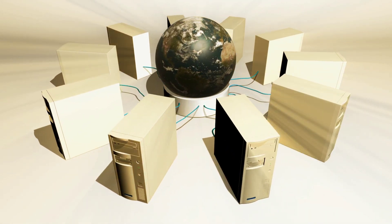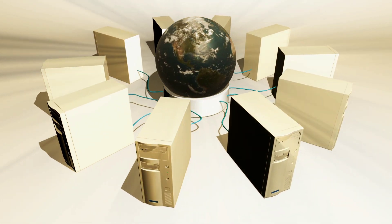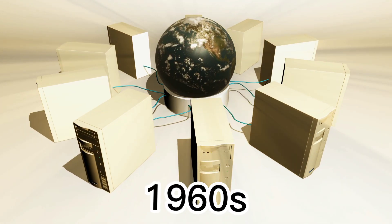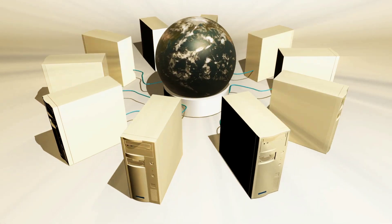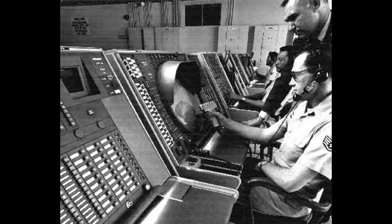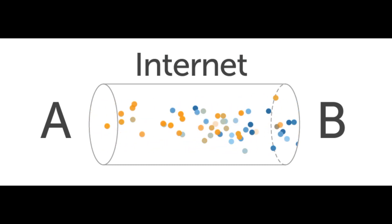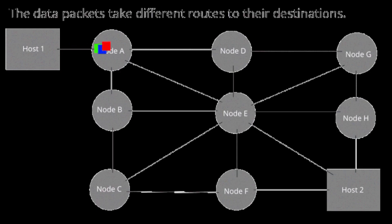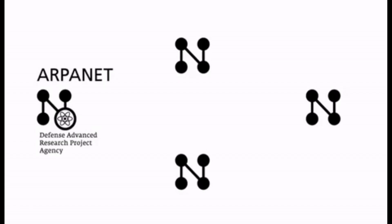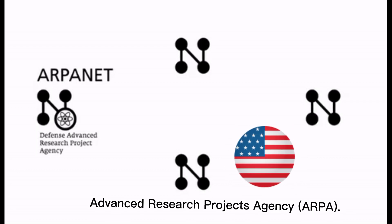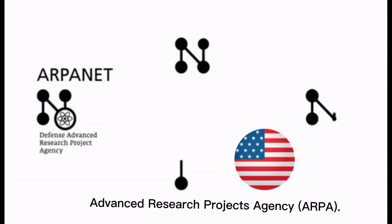The Internet has undergone significant evolution since its creation in the 1960s. The early stages of the Internet were primarily focused on connecting government and academic researchers through the use of packet switching technology, which allowed data to be sent in small packets rather than as a whole, making it more efficient. The first version of the Internet, called ARPANET, was created by the United States Department of Defense in 1969.